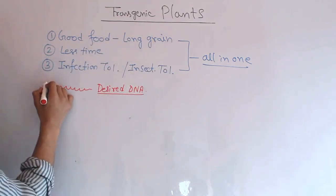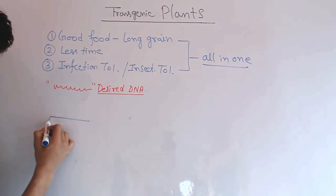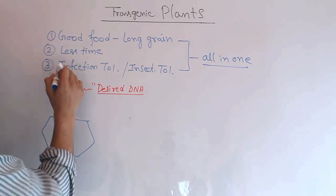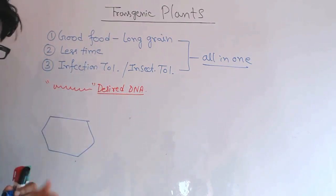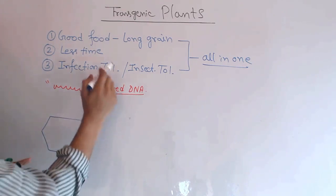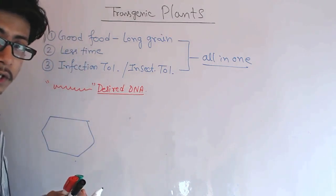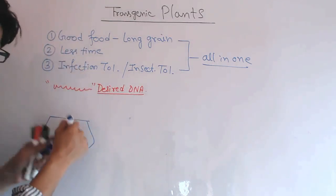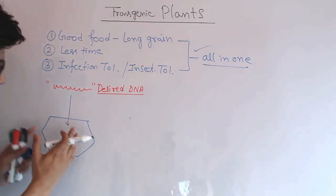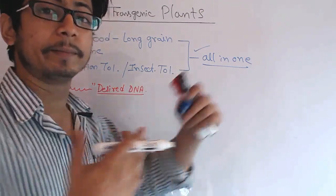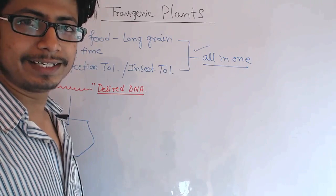This desired DNA or gene, when inserted into the plant, will produce proteins that help make better quality grain or food source. Now there is a type of ordinary plant cell that has the capability of resisting insects and infections — it's insect-tolerant and infection-tolerant — and it can also be grown in a very short amount of time. But this plant produces a poor quality, small seed. So if we insert our desired DNA inside this plant cell, we can get all traits in one.